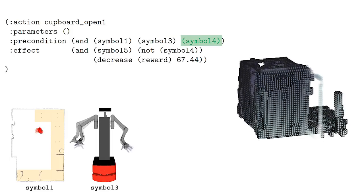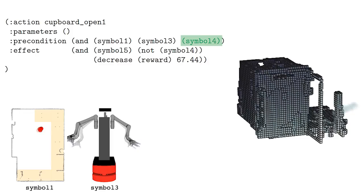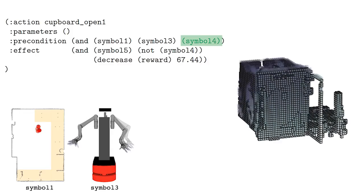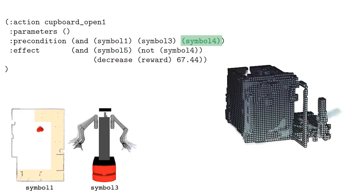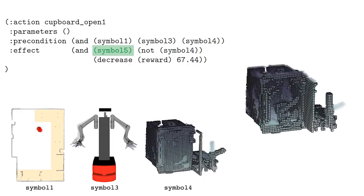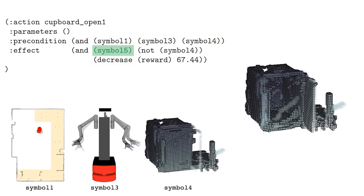Finally, Symbol 4 is a distribution over the voxels that make up the cupboard. Sampling that distribution, we can see a lot of variation, including in the position of the switch, but the cupboard door is always closed. If the robot executes the operator, then Symbol 4, that the door is closed, becomes false, and Symbol 5, which we can see refers to the case that the door is open, becomes true.